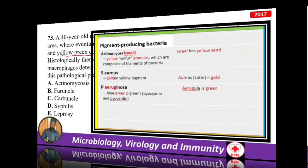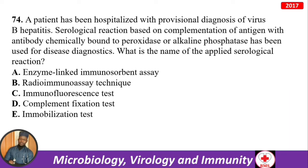A patient hospitalized with provisional diagnosis of viral hepatitis B: serological reaction based on antigen-antibody complementation with peroxidase or alkaline phosphatase — when you see these enzymes, the answer is enzyme-linked immunosorbent assay (ELISA).